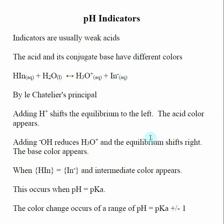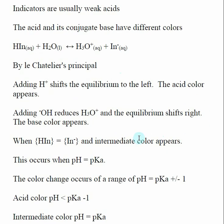The important part of pH indicators is when the concentration of our weak acid and the concentration of its conjugate base are equal to each other, we get a very specific color, and so that allows us to know when we've reached a defined pH. This occurs when our pH is equal to the pKa of the solution, so indicators are really good at allowing us to know when we've reached a particular pH.